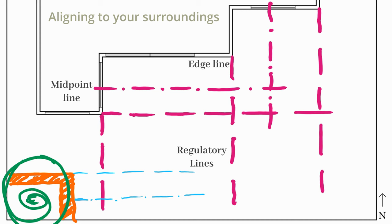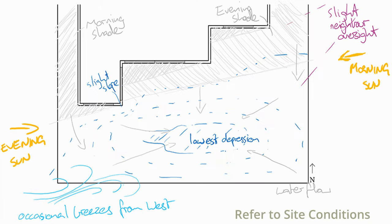The second part about positioning is to refer to the environmental and site conditions — so where you have sun, shade, high points, low points, slopes, particular ground materials like rock. Basically, the natural elements of your site. Some of these are static, like the ground. Others are dynamic, like sun, shade, wind, and rain.